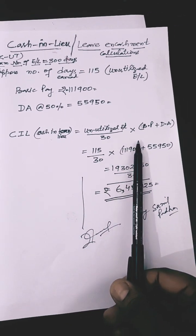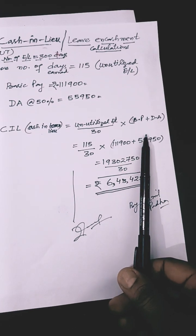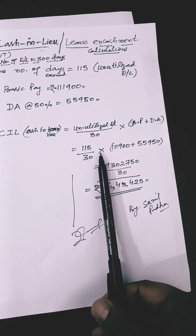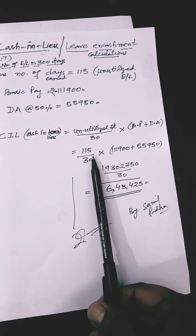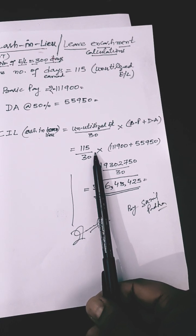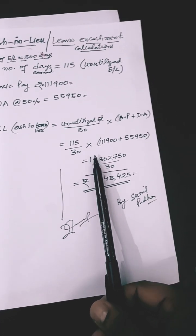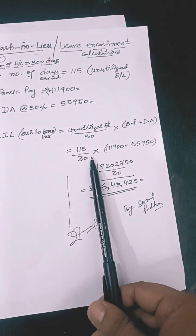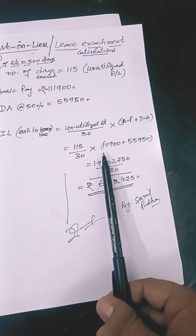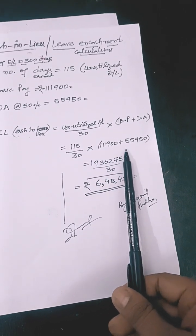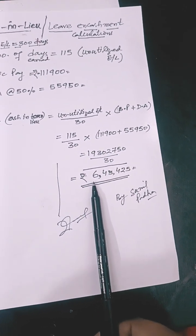upon 30 into basic pay plus DA. So if 115 days, then we can use any number of days that you want to calculate. 115 upon 30, that is the number of days in a month, into basic pay plus DA. Then after calculation you will get the amount ₹64,025.